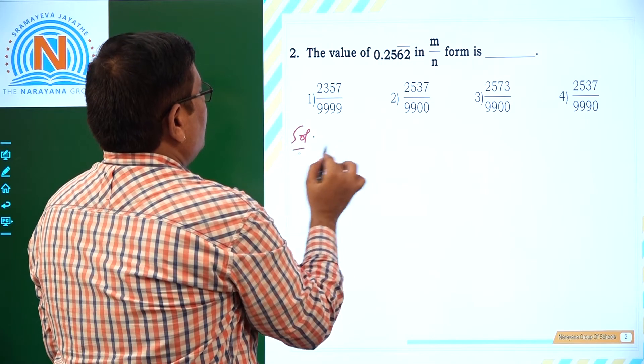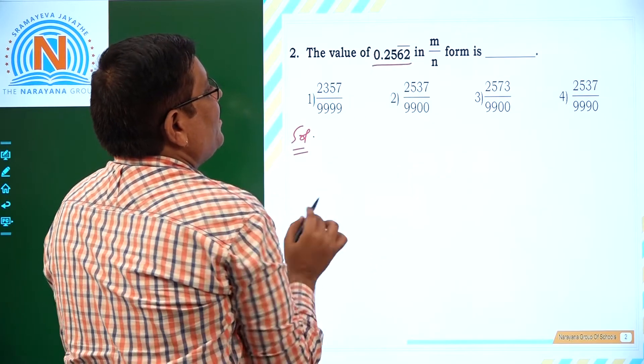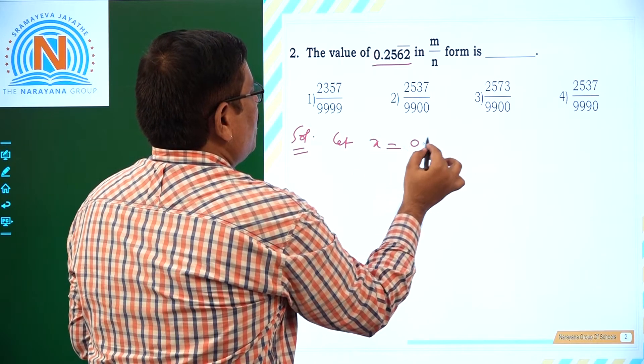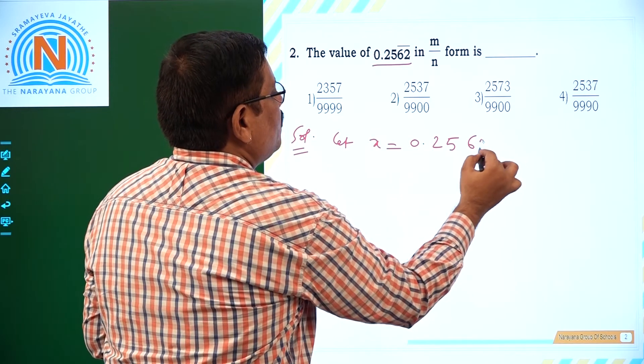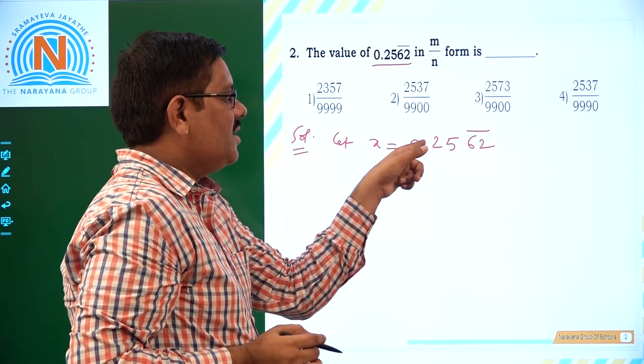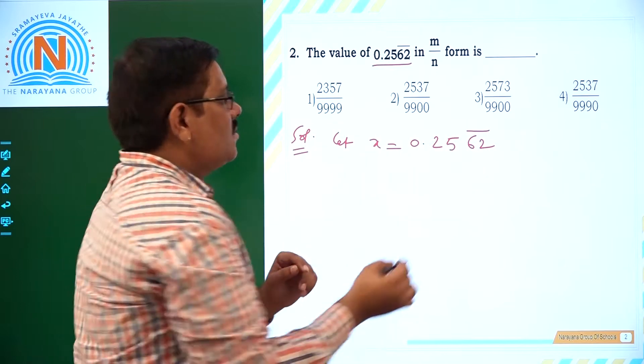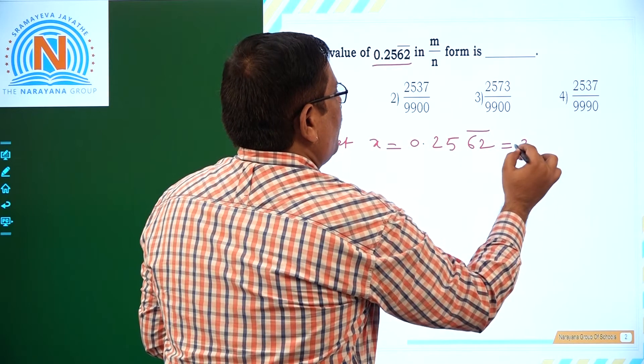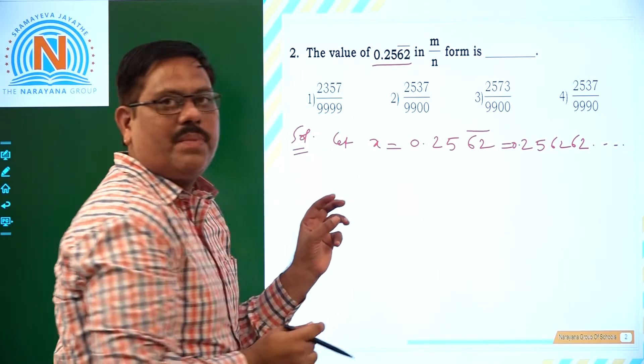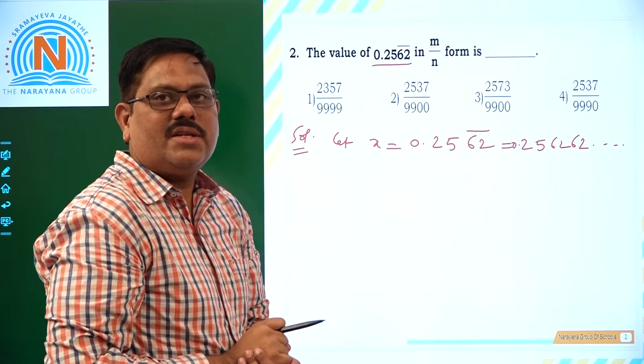Now we will take the second question. The value of 0.2562 bar. Here if we will look at this, let us state x as 0.2562 bar. It is a mixed recurring. Here 2, 5, after decimal is not recurring decimal. So what we have now? This is 0.2562, 62. So 62 is the period for this and its periodicity is 2.